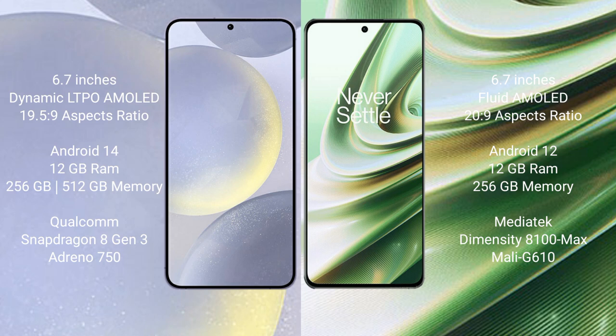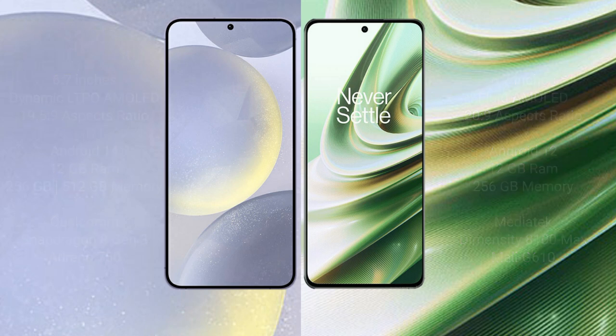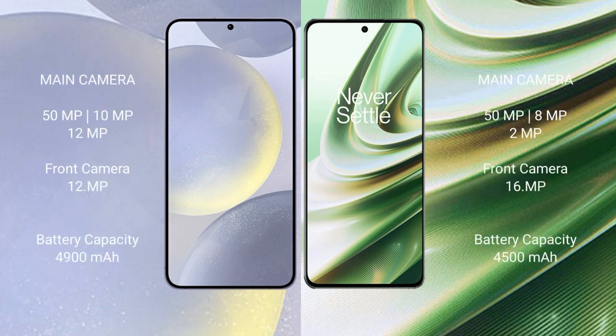The Samsung Galaxy S24 Plus comes with 12GB RAM and 256GB or 512GB internal storage, powered by the Snapdragon 8 Gen 3 processor with Adreno 750 GPU. The OnePlus 10R comes with 12GB RAM and 256GB or 512GB internal storage, powered by the MediaTek Dimensity 8100 Max processor with Mali-G610 GPU.